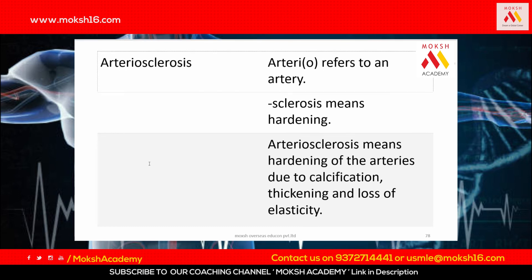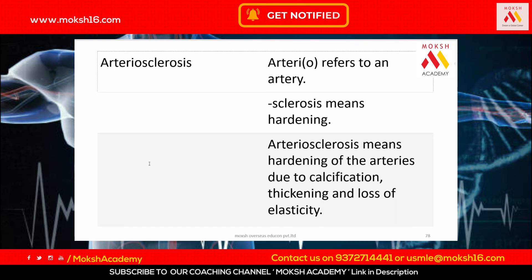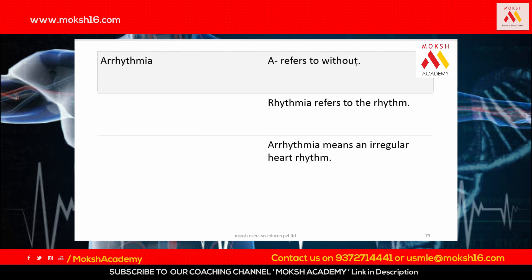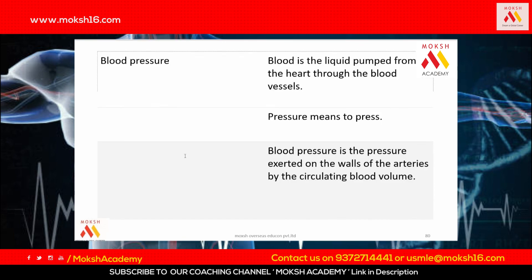Arteriosclerosis — arterio means artery and sclerosis means hardening — so arteriosclerosis means hardening of the arteries due to calcification, thickening, and loss of elasticity. Arrhythmia means without rhythm — the prefix a means without and rhythmia refers to rhythm — so arrhythmia means an irregular heart rhythm.